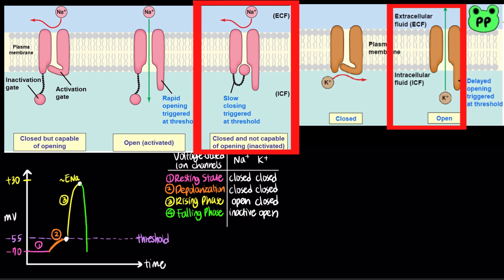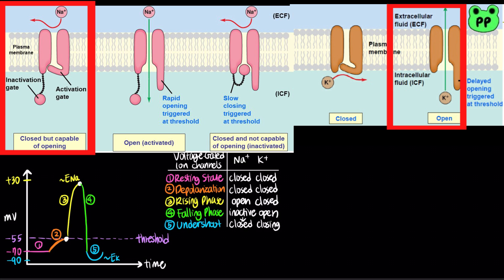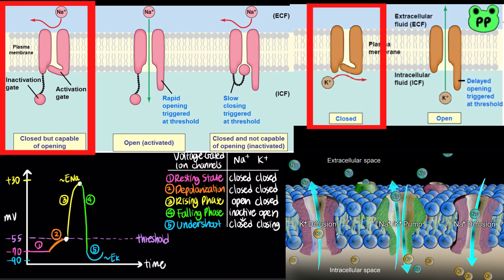Both events quickly bring the membrane potential back towards the equilibrium potential of potassium ion. In the final phase, called the undershoot, the membrane's permeability to potassium ion is higher than at rest, so the membrane potential is closer to the equilibrium potential of potassium ion than it is at resting potential. The voltage-gated potassium channels eventually close, and the sodium-potassium pump restores the membrane potential to the original resting potential.